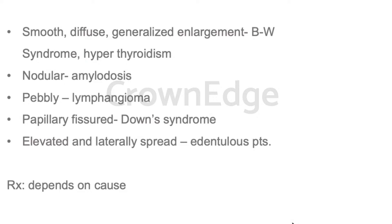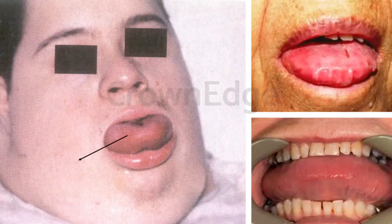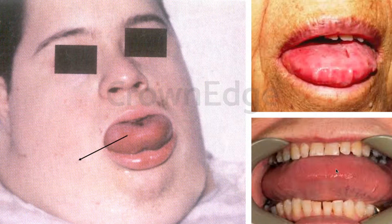Based on the etiology, macroglossia has different presentations. In Beckwith-Wiedemann syndrome and hypothyroidism, you see smooth, diffuse, generalized enlargement. In amyloidosis it is nodular. In lymphangioma-related macroglossia it is pebbly. In Down syndrome it is papillary and fissured. In edentulous patients it is elevated, laterally spread, and lax. Treatment depends on the cause. Here you can see the crenated tongue due to pressing of the teeth.